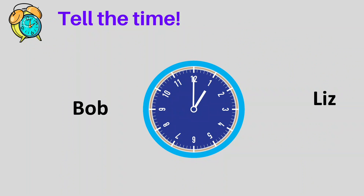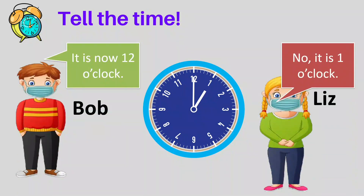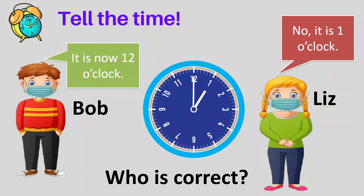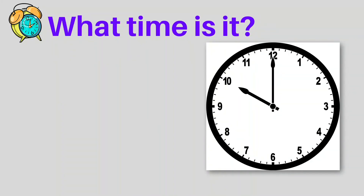Now tell the time. Bob and Liz will tell the time. Bob said it is twelve o'clock. Liz said no, it's one o'clock. Who is correct? Yes, it's Liz, because the hour hand is pointing at one and the minute hand is pointing at twelve, so it's one o'clock.